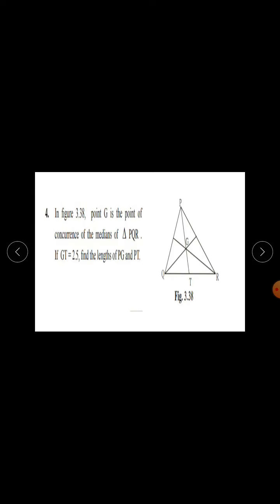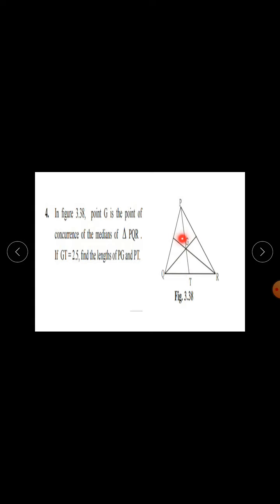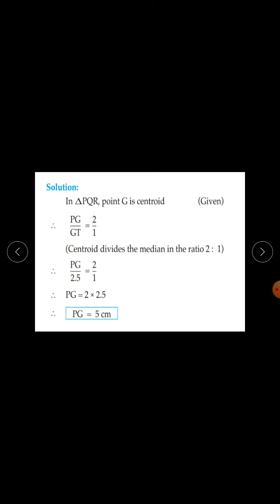In triangle PQR, point G is the centroid. Therefore, PG upon GT equals 2 upon 1, because the centroid divides the median in the ratio 2 is to 1. Since GT is given as 2.5, substituting: PG upon 2.5 equals 2 upon 1, so PG equals 2 into 2.5, therefore PG equals 5 centimetres.